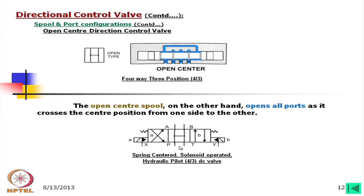Looking at the symbol: there is a small box with a slanting line on the B and A sides — these represent solenoids. The arrows that are completely filled (blackened) with X and Y represent two hydraulic pilots; these can also be used to actuate. This means the valve has two features: it can be operated either by solenoids or hydraulically by a pilot, which senses pressure from the circuit and operates accordingly.